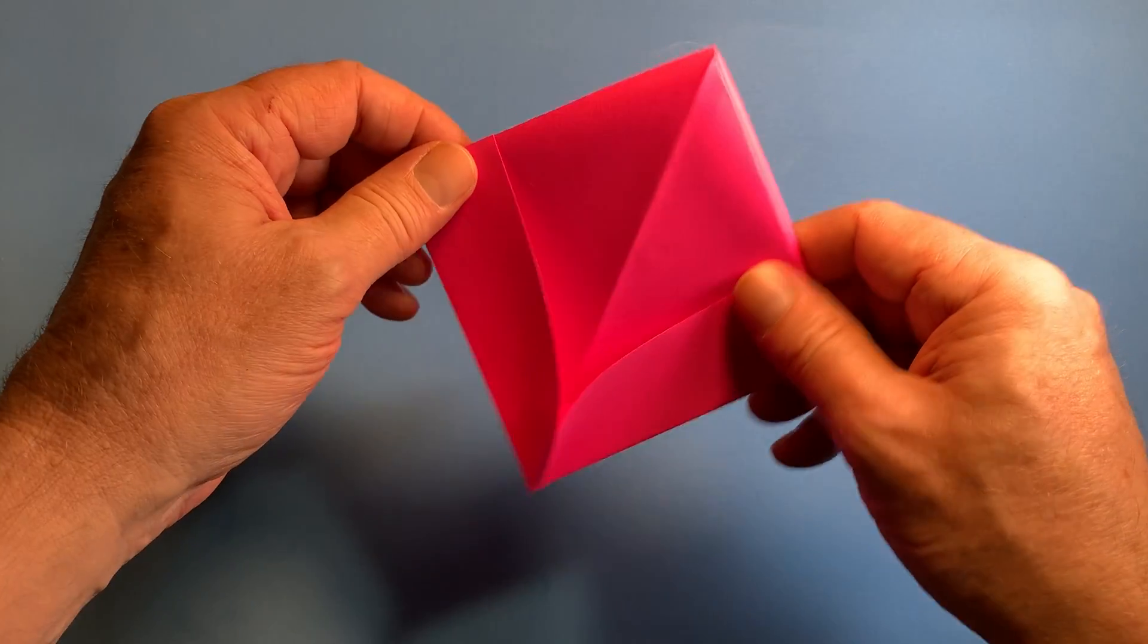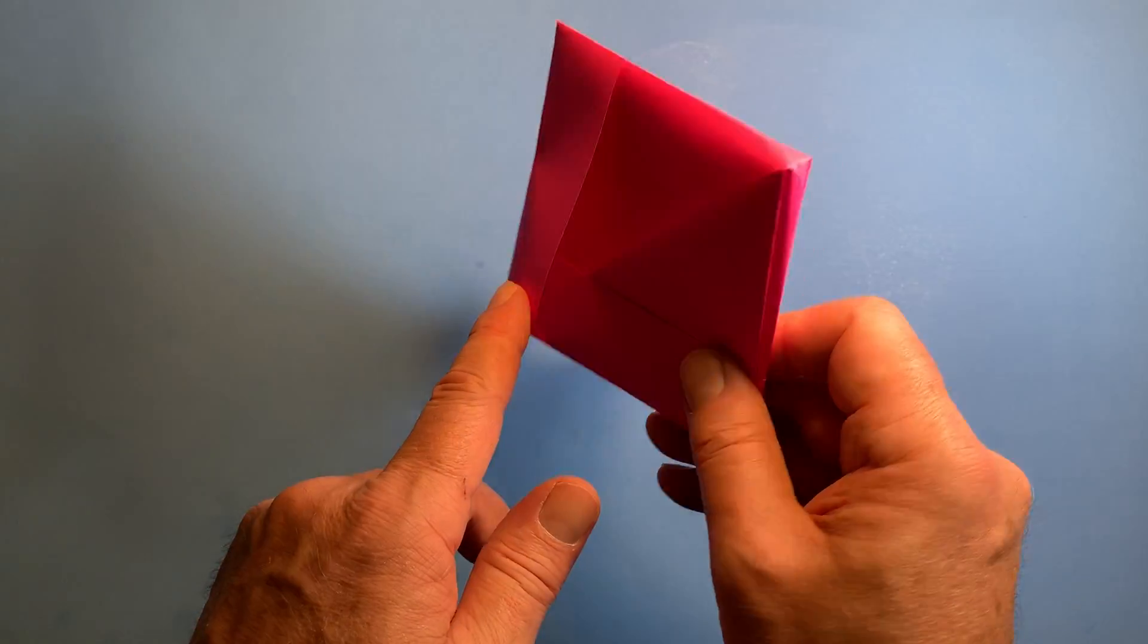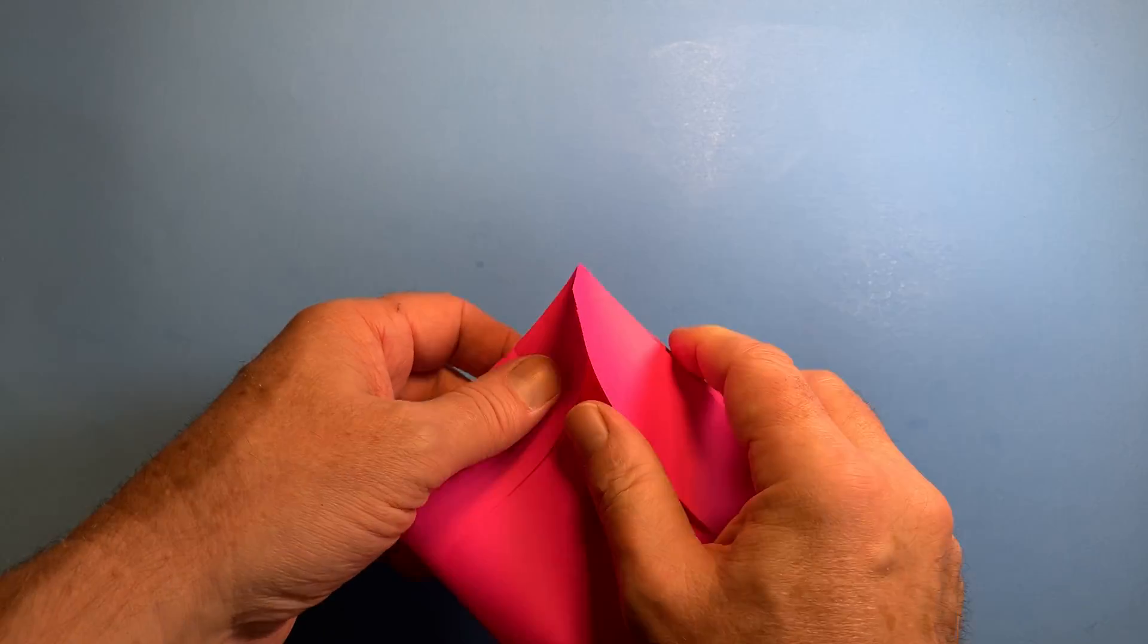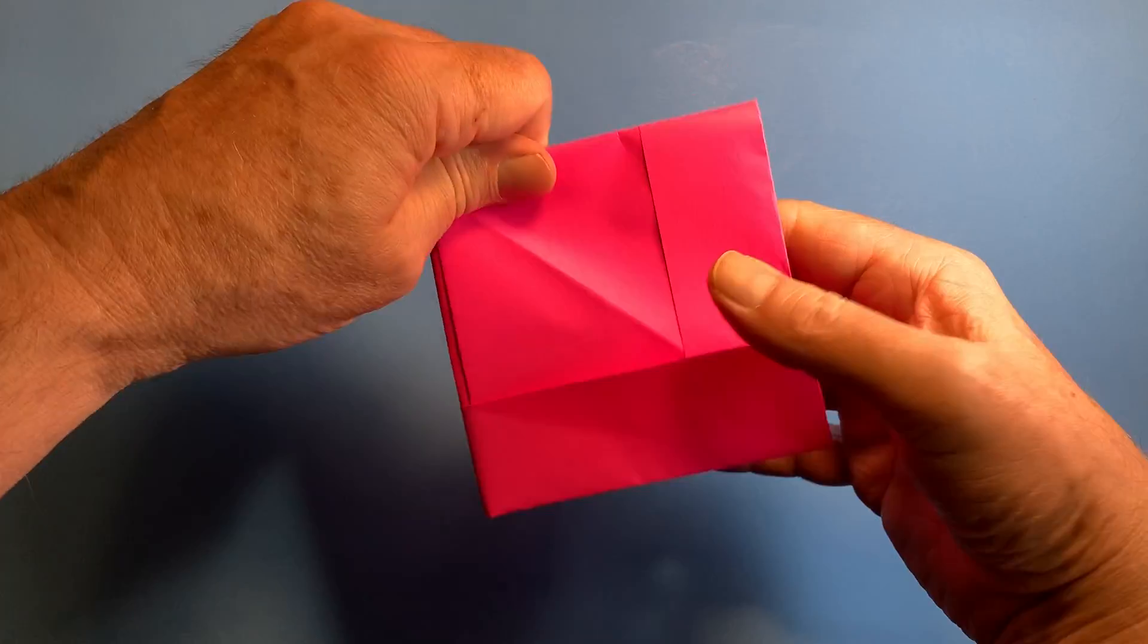You go like this. Now you're going to want to tuck that in there. Flip it over, tuck one of these sides in as well, and now crease it down good.